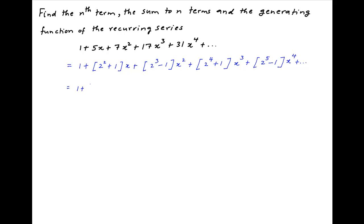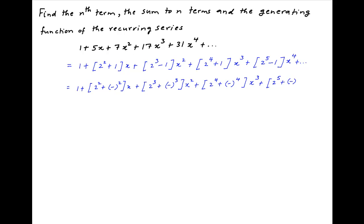This can be written as 1 plus (2 squared plus (−1) squared) multiplied by x, plus (2 cubed plus (−1) cubed) times x squared, plus (2 raised to the power 4 plus (−1) raised to the power 4) multiplied by x cubed, plus (2 raised to the power 5 plus (−1) raised to the power 5) times x raised to the power 4, plus and so on. The nth term is (2 raised to the power n plus (−1) raised to the power n) multiplied by x raised to the power n minus 1.